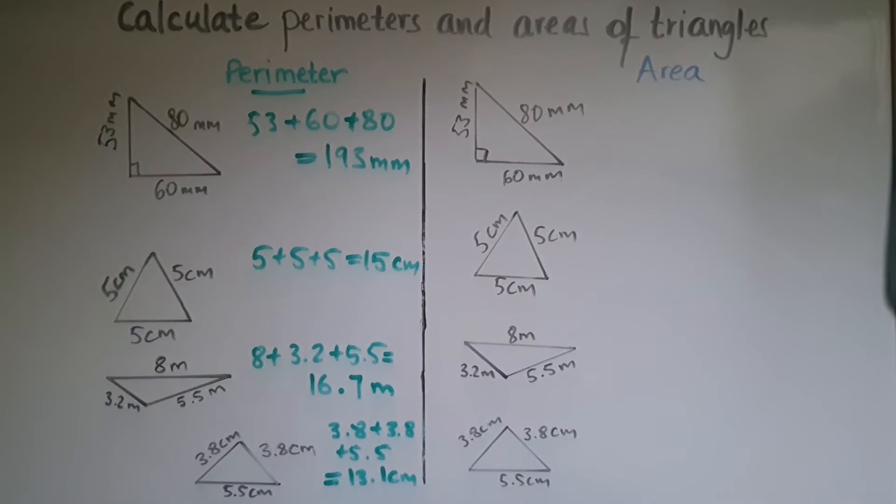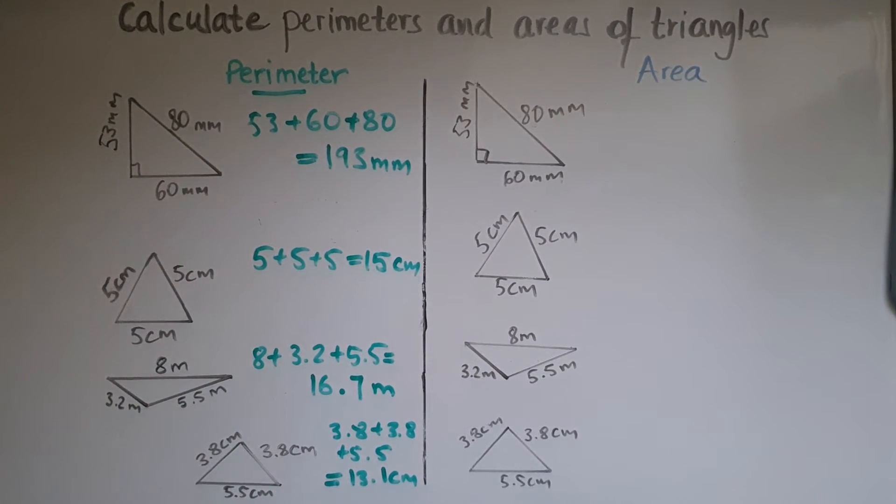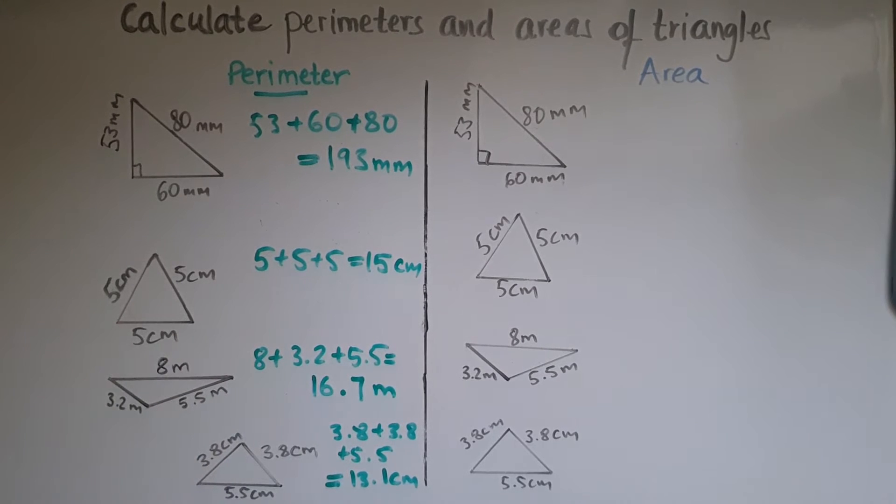So working out the perimeter is quite straightforward. It's going around the shape, adding all of the dimensions or the lengths or the sides.